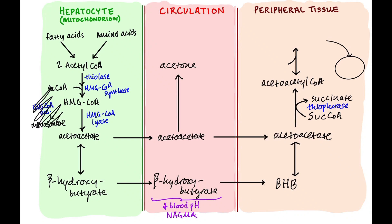Once we have acetoacetyl-CoA, we convert it to two acetyl-CoA molecules — requiring another CoA coming in. Acetyl-CoA then goes into the TCA cycle, generating NADH, which goes into the electron transport chain to make ATP. That's how we get energy from ketone bodies.